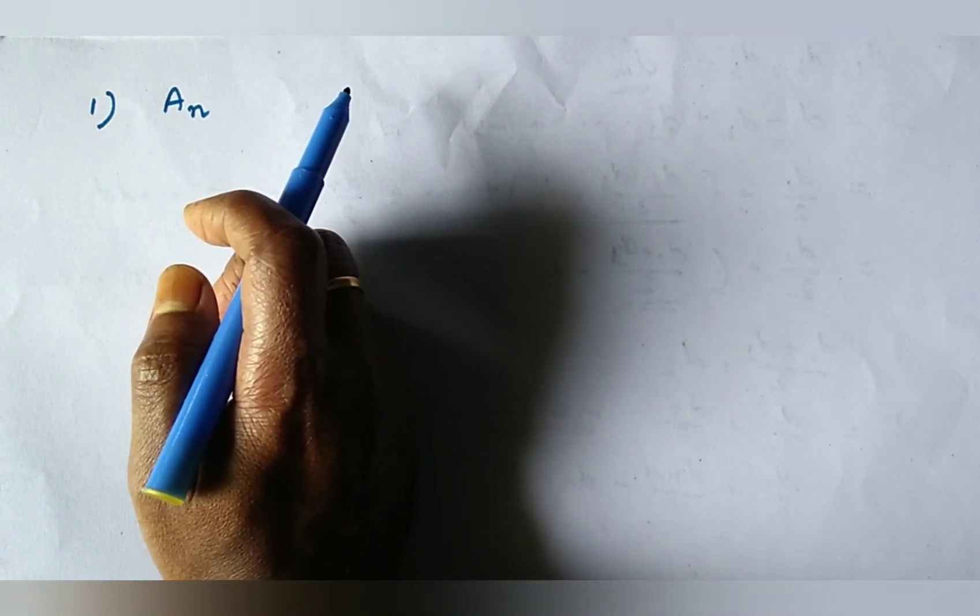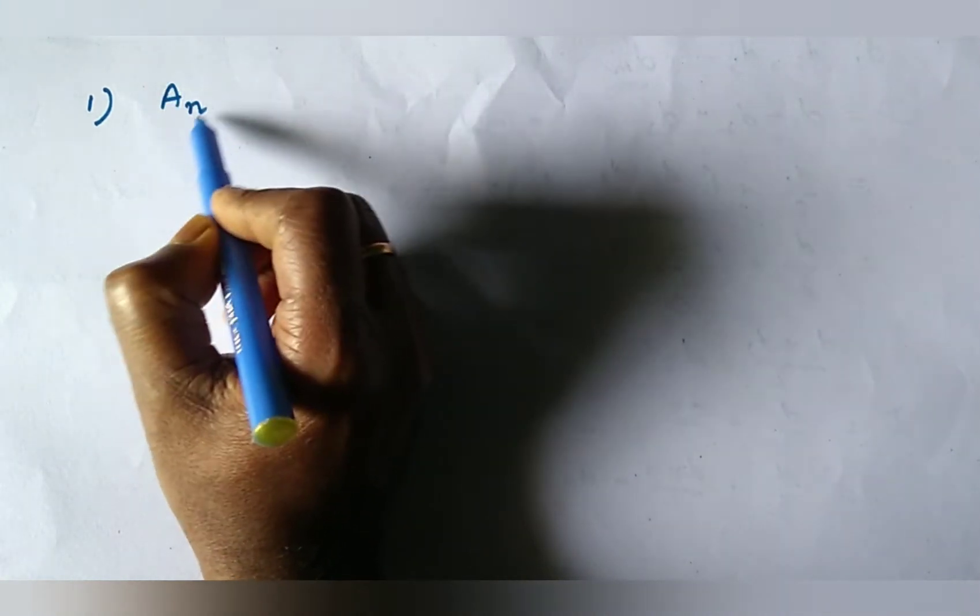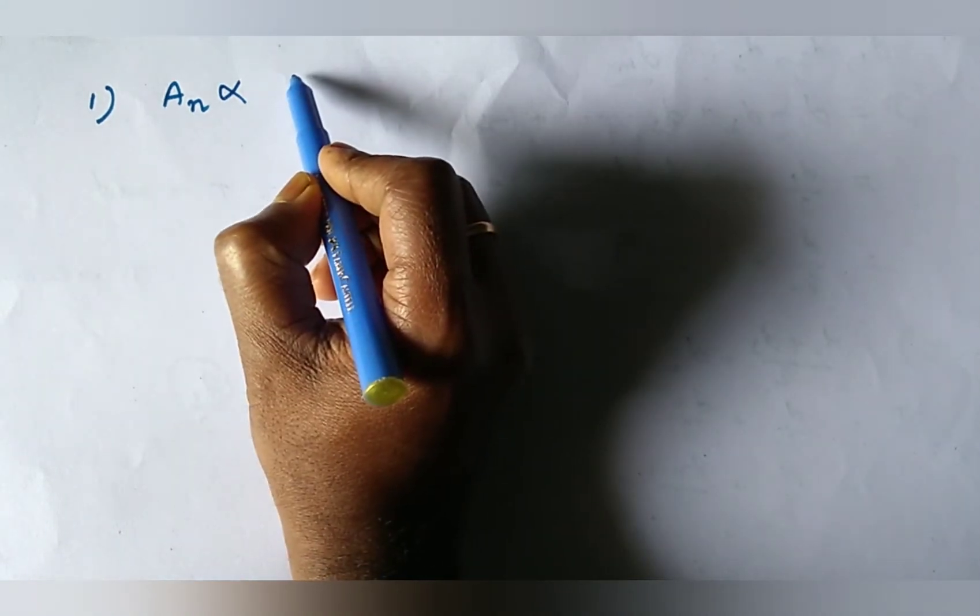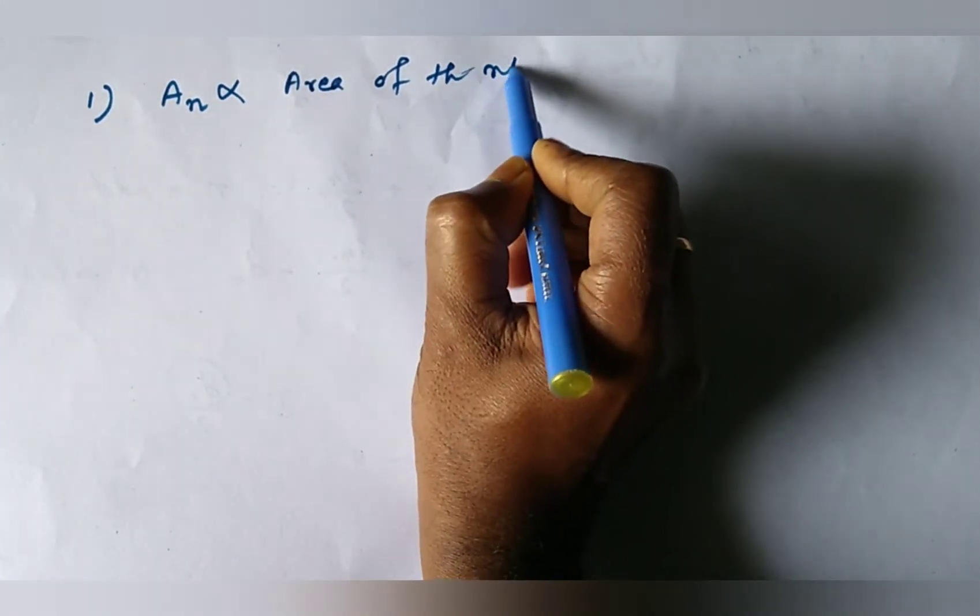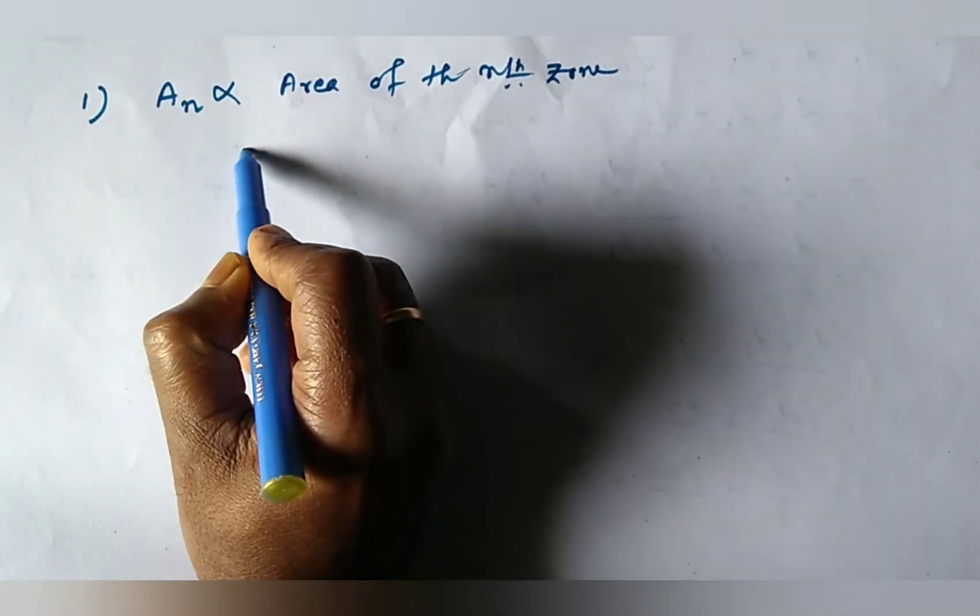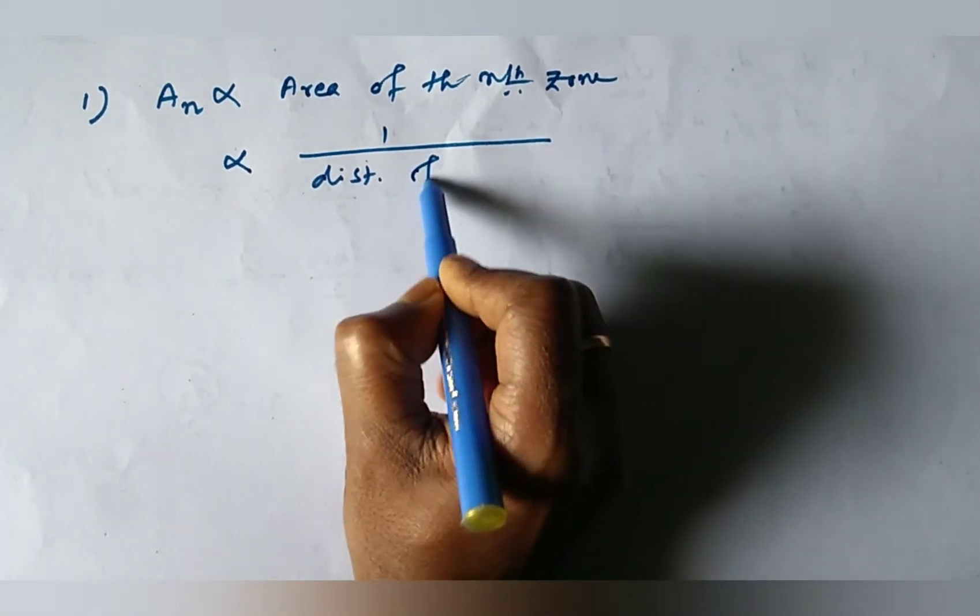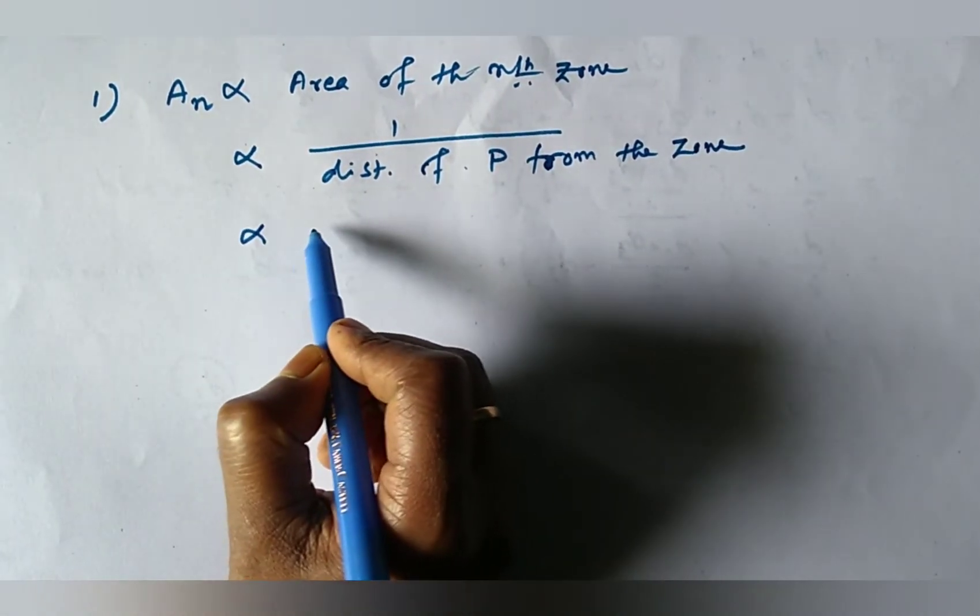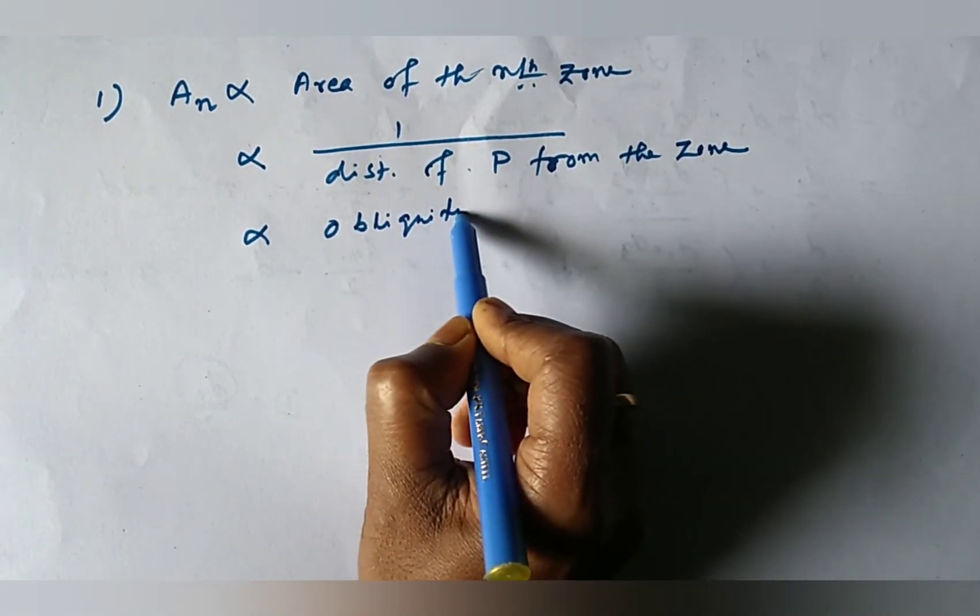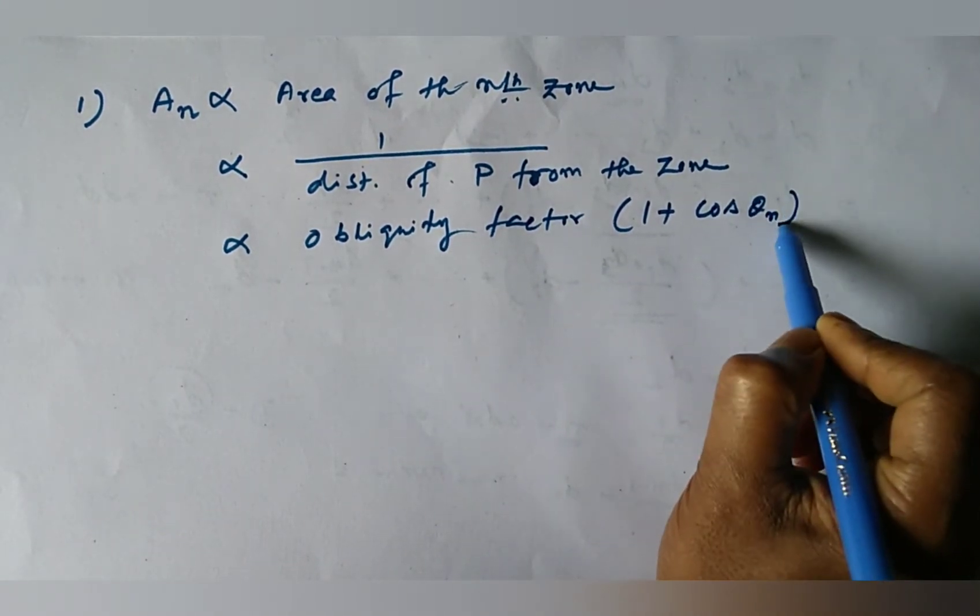Again, according to Fresnel, the amplitude at P due to the waves coming from the nth zone depends on the factors below. So, if An be the amplitude, then it is proportional to the area of the nth zone, and proportional to 1 by distance of P from the zone, and proportional to the obliquity factor 1 plus cos theta n.